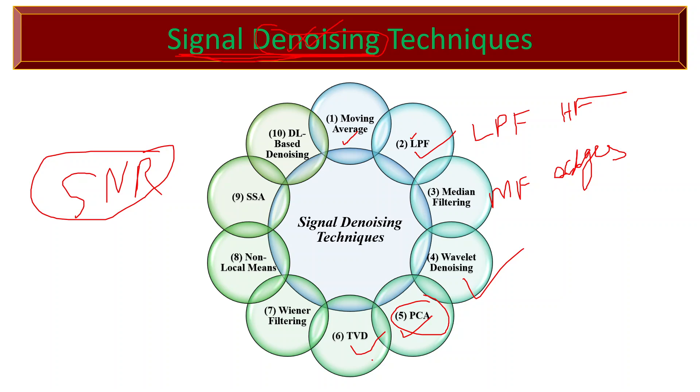Wiener Filter is an optimal linear filtering technique that aims to minimize the mean square error (MSE) between the denoised and original signal. It uses knowledge of signal and noise statistics to estimate the optimal filter.